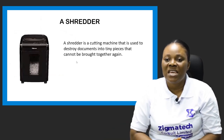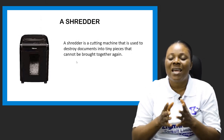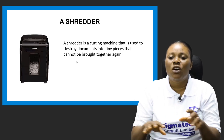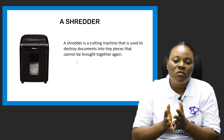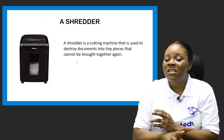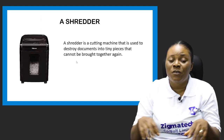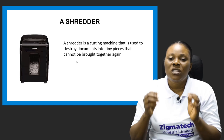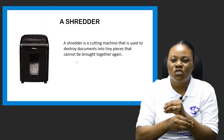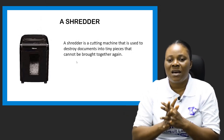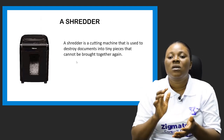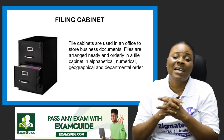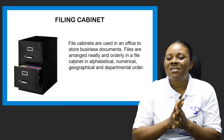Another machine is the shredder, which can be referred to as a cutting machine. This machine is used to destroy documents into tiny pieces that cannot be brought together again. For example, if there is a confidential document you don't want any other person to have access to, and you are done with it, you open the shredder, throw it inside, press the button, and it will shred it into tiny pieces that cannot be brought together again. So the shredder is a very important piece of equipment used in an office.